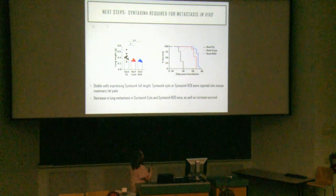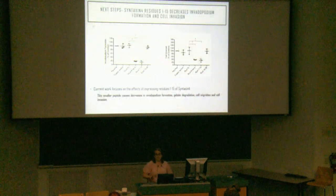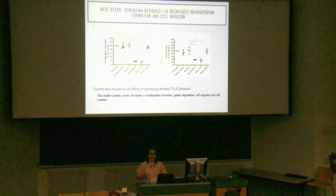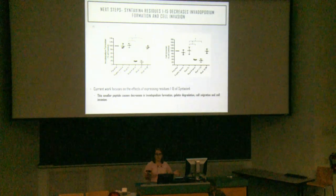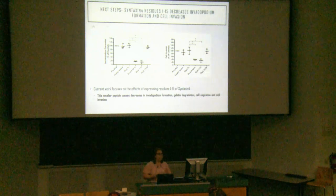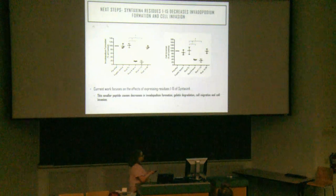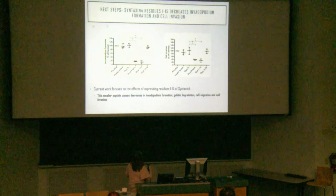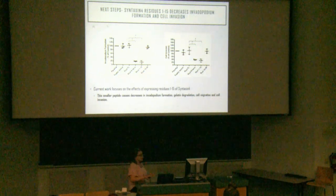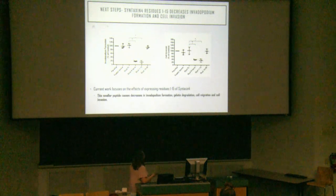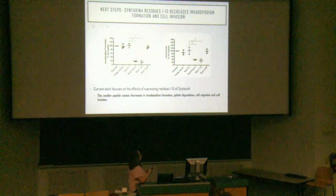My research is now moving toward looking at a smaller peptide than residues 1–29 — specifically 1–15 and 15–29. A key residue previously characterized is leucine 8 within 1–29, shown to be required for binding to MUNC18C. When expressing residues 1–15, we see a similar decrease in invadipodia formation as with the full Syntaxin-4 N-terminal. However, we don't see this with residues 15–29. In a Boyden transwell Matrigel assay, the 1–15 peptide also gives decreased cellular invasion, similar to the full Syntaxin-4 N-terminal.